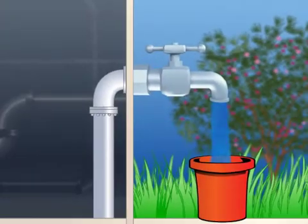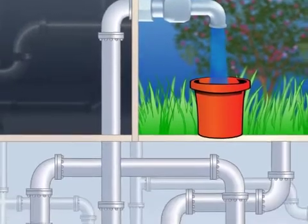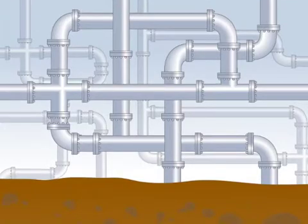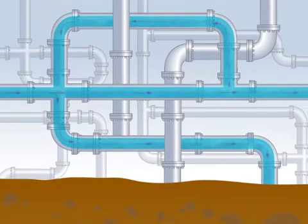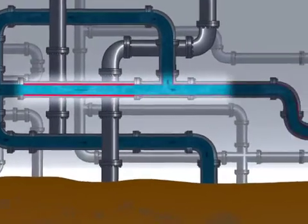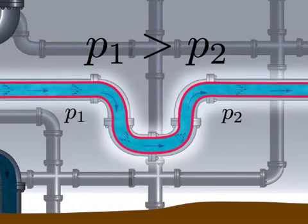The water that comes out of the tap at your home travels through a complex city water supply system, which is an excellent example of an engineered piping network. As fluid circulates through a piping network, it encounters frictional resistance from the channel walls and fittings, and the fluid stream loses pressure as it overcomes these flow resistances.